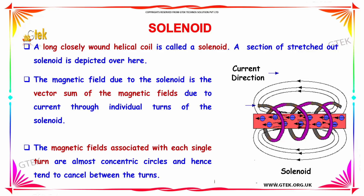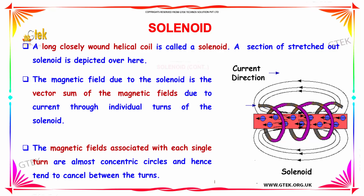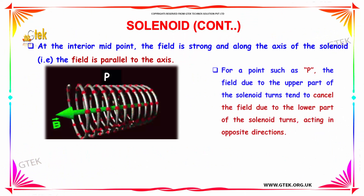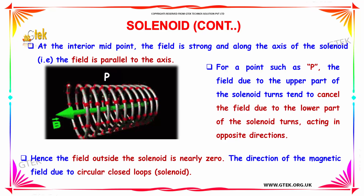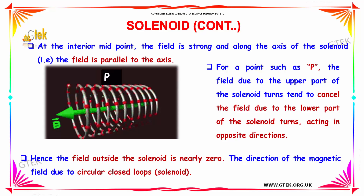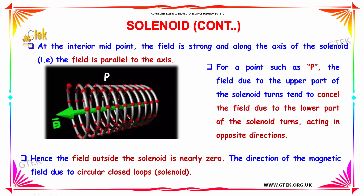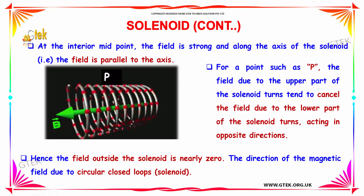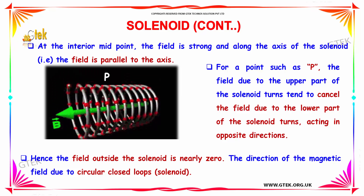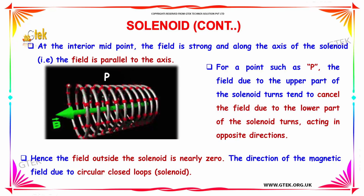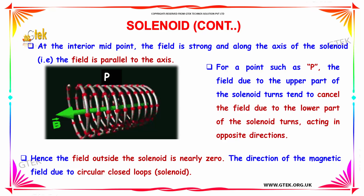The magnetic field associated with each turn are almost concentric circles and hence tend to cancel between the turns. At the interior midpoint, the field is strong and along the axis of the solenoid the field is parallel to the axis. For a point such as P, the field due to the upper part of the solenoid turns tends to cancel the field due to the lower part of the solenoid turns, which is acting in the opposite direction.